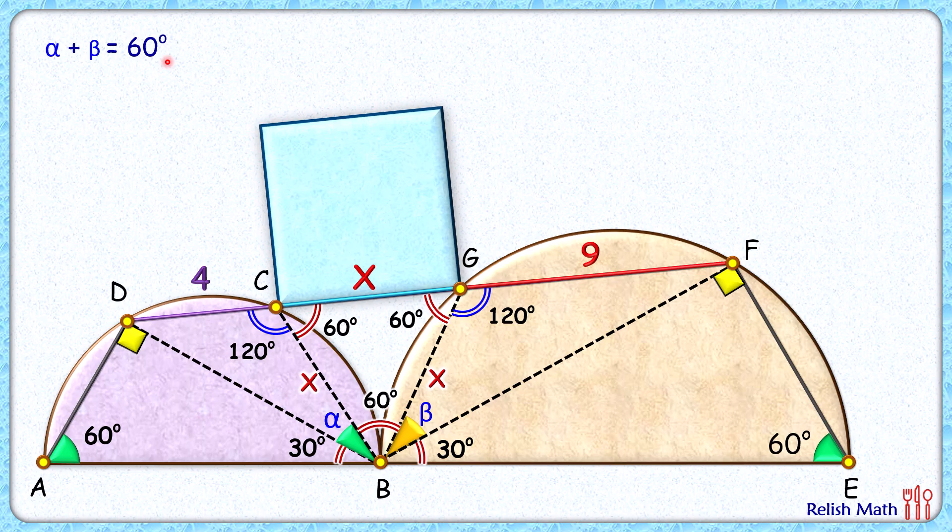Now in this green triangle, if you take this yellow angle as y, we'll get alpha plus 120 plus y is 180 degrees, or alpha plus y is 60 degrees. Comparing it, we'll get this yellow angle is nothing but beta degrees, so this angle here is beta degrees.